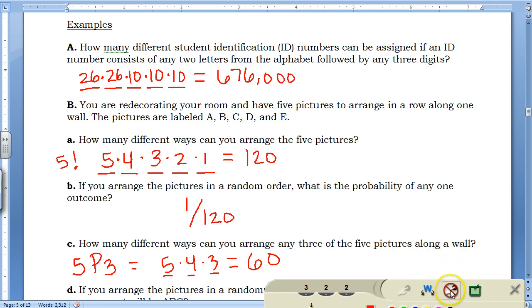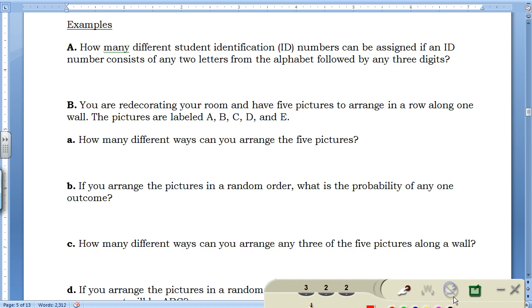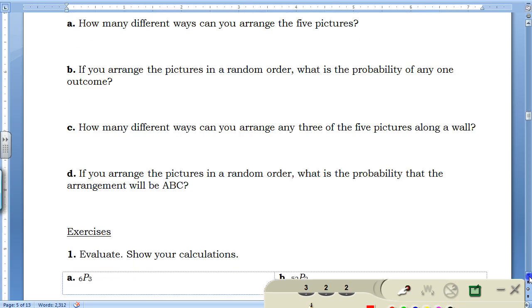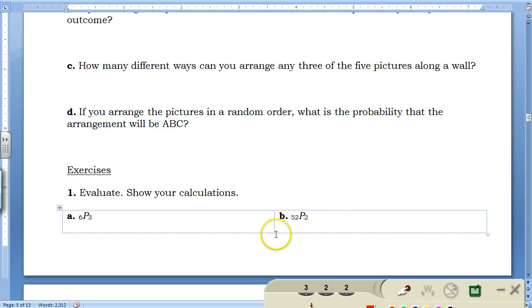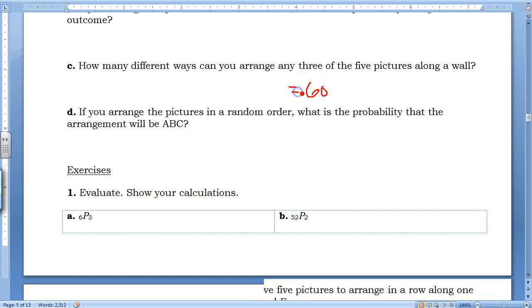If you arrange the pictures in a random order, what is the probability that the arrangement will be ABC? We saw up here that the answer was 60. So the correct alphabetical order, there's only one way out of the 60 possibilities that they'll be in the right order.